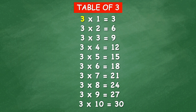Table of 3: 3 times 1 equal 3, 3 times 2 equal 6, 3 times 3 equal 9, 3 times 4 equal 12, 3 times 5 equal 15, 3 times 6 equal 18, 3 times 7 equal 21, 3 times 8 equal 24.